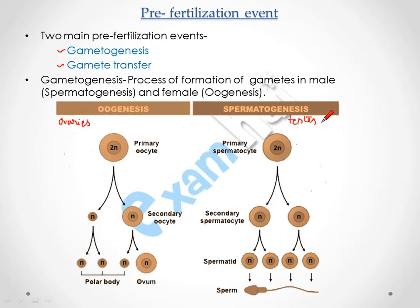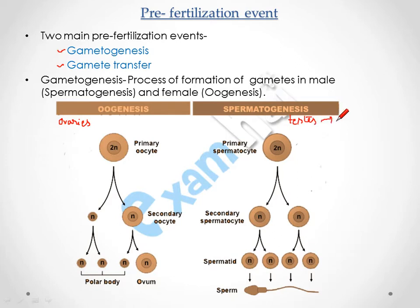Spermatogenesis is the process by which the male gamete — called sperm — is formed. The sperm is haploid, containing half the number of chromosomes. In this process, meiotic division takes place: first DNA replication occurs, and then division takes place twice. In the testes, germ cells called spermatogonium are formed.